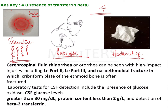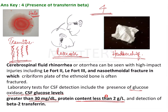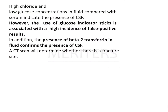Laboratory tests for CSF detection include the presence of glucose oxidase, CSF glucose levels greater than 30 mg per deciliter, and protein content less than 2 g per litre. Detection of beta-2 transferrin is also used. High chloride and low glucose concentrations in the fluid compared with serum indicate the presence of CSF — meaning CSF has a higher glucose level but lower protein and chloride.